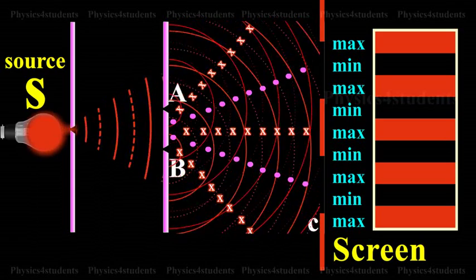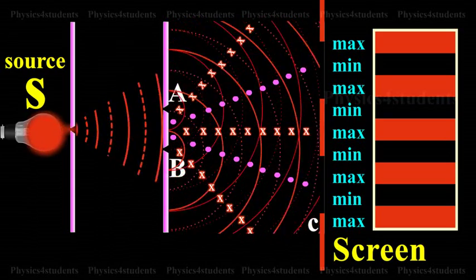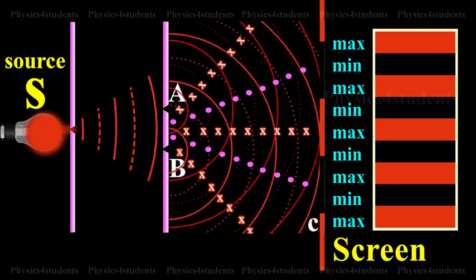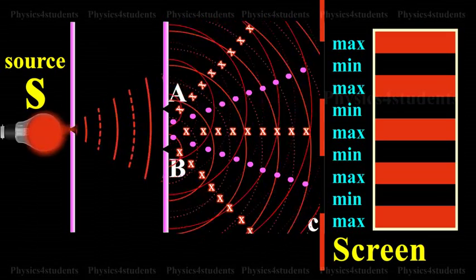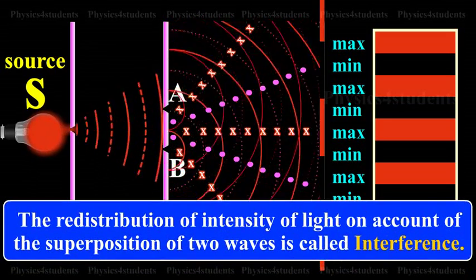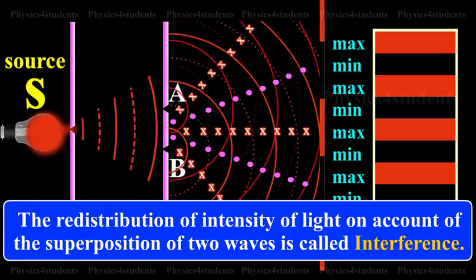Therefore, on a screen XY, the intensity of light will be alternatively maximum and minimum, i.e., bright and dark bands which are referred to as interference rings. The redistribution of intensity of light on account of the superposition of two waves is called interference.